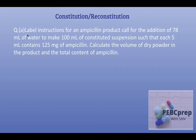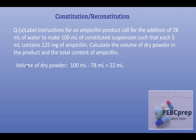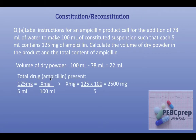The next question: label instructions for an ampicillin product call for the addition of 78 milliliters of water to make 100 milliliters of constituted suspension, such that each 5 ml contains 125 mg of ampicillin. Calculate the volume of dry powder in the product and the total content of ampicillin. The dry powder volume is 100 ml − 78 ml = 22 ml. The total ampicillin: 125 mg per 5 ml in 100 ml gives us 2500 milligrams.